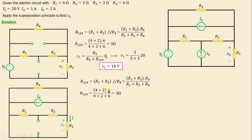We can see that R1 is in series with R2 parallel to R4, so R124 remains equal to 3 ohms. To calculate the voltage V2 across R3, we first find the current i through R3 using the current division rule: i = −R124 / (R3 + R124) × Ia.